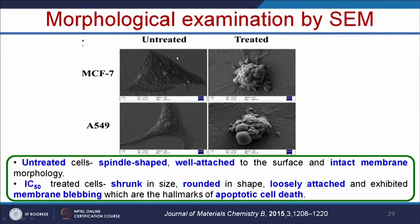We can also examine the morphology of untreated and treated cells using scanning electron microscopy. MCF7 is the breast cancer cell line and A549 is the lung cancer cell line. Untreated cells have spindle-shaped cells, well attached to the cell culture dish, with intact membrane morphology. But in the IC50 concentration treated cells, the cells are shrunk, became rounded in shape, loosely attached, and show membrane blebbing — which are the hallmarks of apoptotic cell death. When cells are alive, they attach tightly to the plastic surface and have a spindle shape. When cells die, they detach, become rounded, and form apoptotic membrane blebs on top.